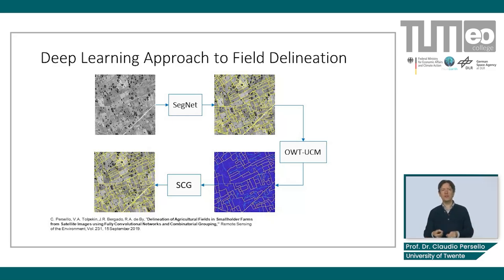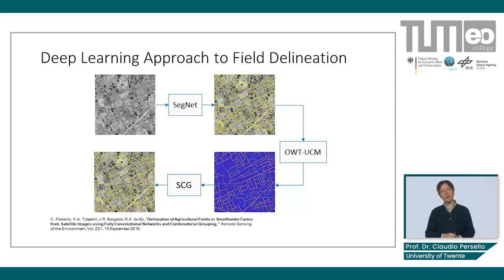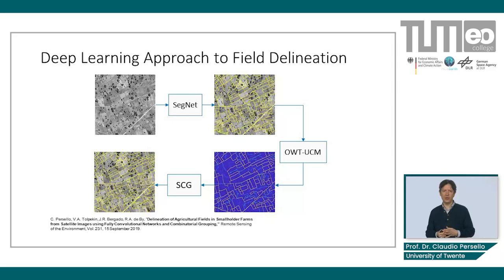Nevertheless, there were still problems — the obtained boundaries were often incomplete and fragmented. To address this problem, we resorted to a technique named Oriented Watershed Transform, which allowed us to derive a hierarchical segmentation also called an Ultrametric Contour Map. The colors of the contours in the figure with the blue background refer to the strength of the boundaries.